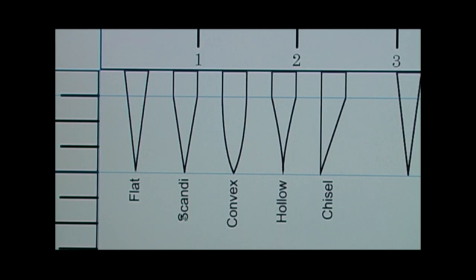Okay, here are your basic five grind types. You've got a flat grind, a scandy grind, a convex grind, a hollow grind, and a chisel grind. And I'm just going to talk a little bit about each one.